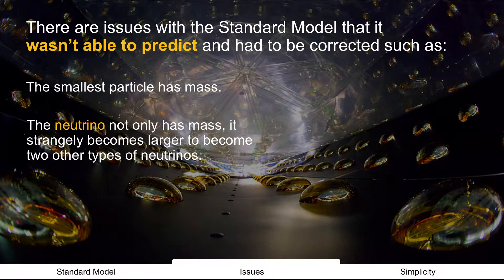But there are also issues with the standard model that it wasn't able to predict. And this is important because it had to be corrected over time. Things such as the neutrino, the smallest particle that has mass. It wasn't originally predicted to have mass. And not only does it have mass, it strangely becomes two larger types of neutrinos. How does that happen?